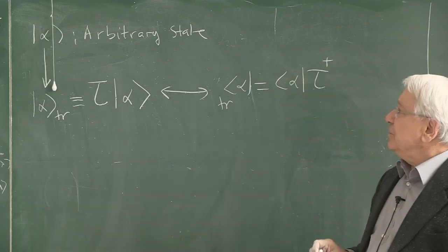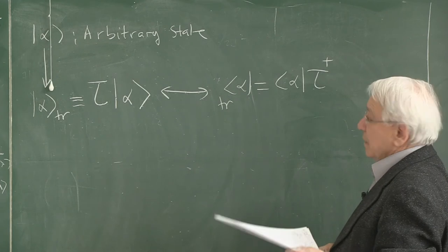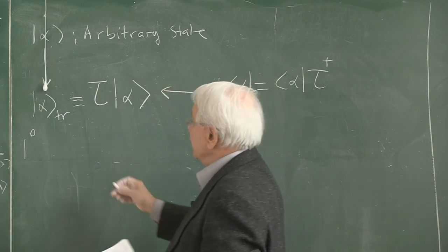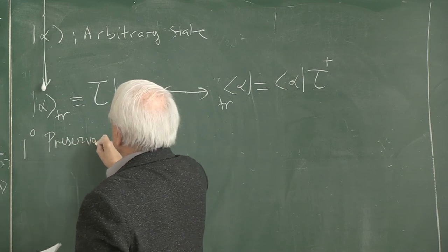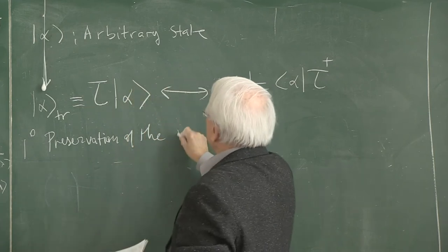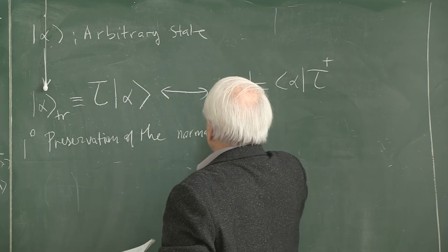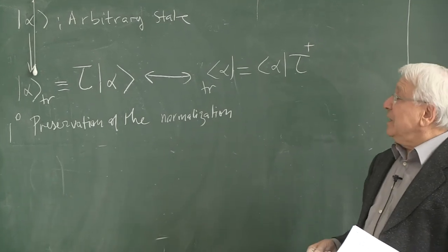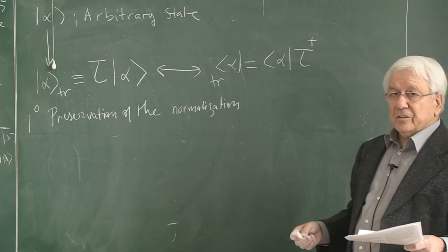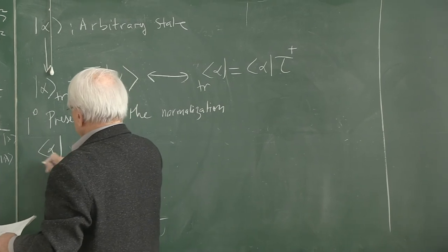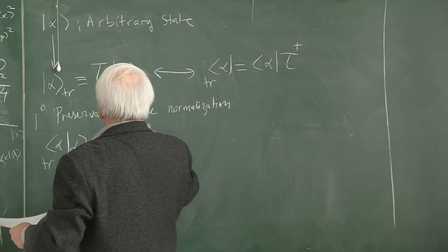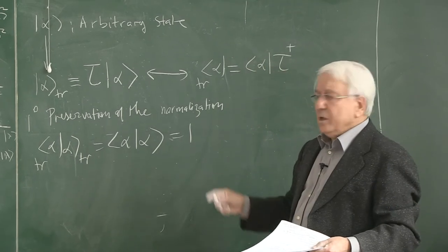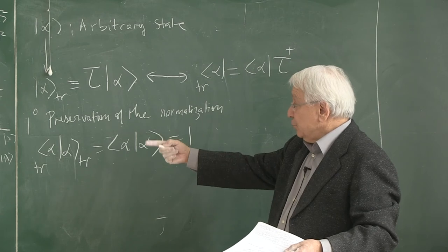The first property we must impose is the preservation of normalization. The state |α⟩, if it is normalized, should remain normalized after translation. That is, I require ⟨α_tr|α_tr⟩ to equal the original normalization. For physical reasons we set it to one, but what is more important is that whatever normalization we have, it is preserved.